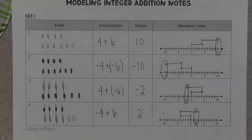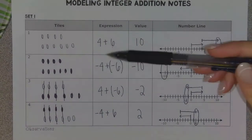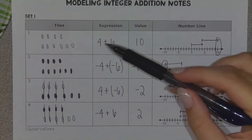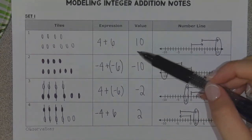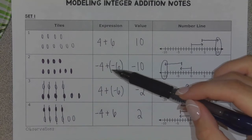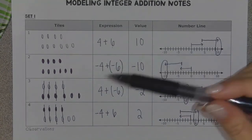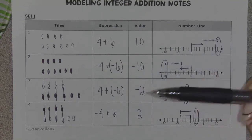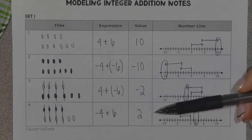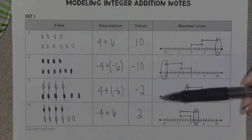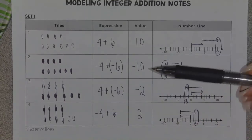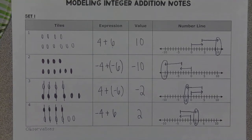Looking at our expressions, we stuck with the same numbers — we had fours and sixes throughout, but we changed whether they were positive or negative. Positive four plus positive six gave us 10. Negative four plus negative six gave us negative 10. Four plus negative six ended up with the value of negative two. And negative four plus six gave us positive two. Same numbers, just changed the sign — so I wonder how we ended up with such different values. Something to think about.